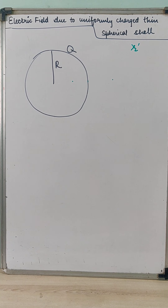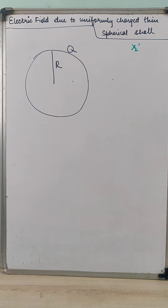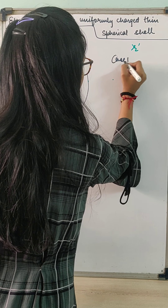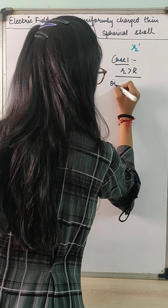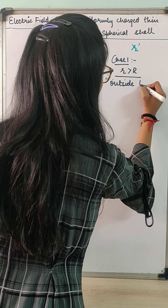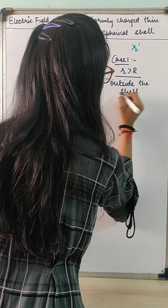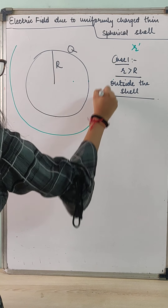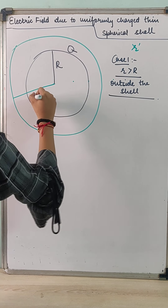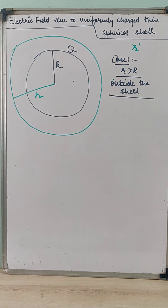For calculating the electric field at distance r, we consider a Gaussian surface of the same radius r. The first case is when r is greater than capital R — that is, we are finding the electric field outside the spherical shell. We consider a Gaussian surface of radius small r such that small r is greater than capital R.